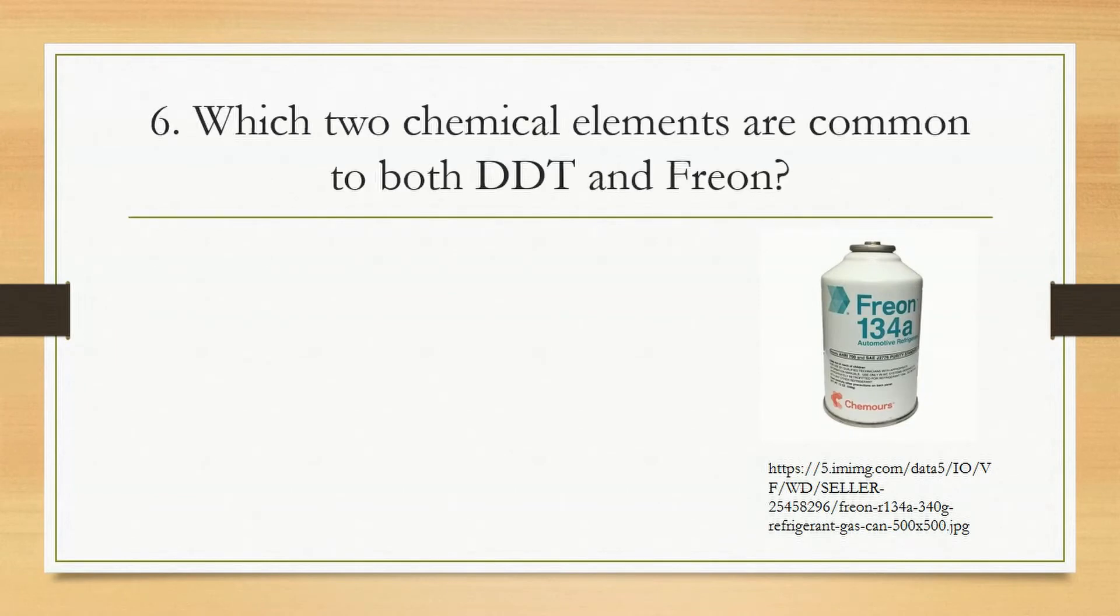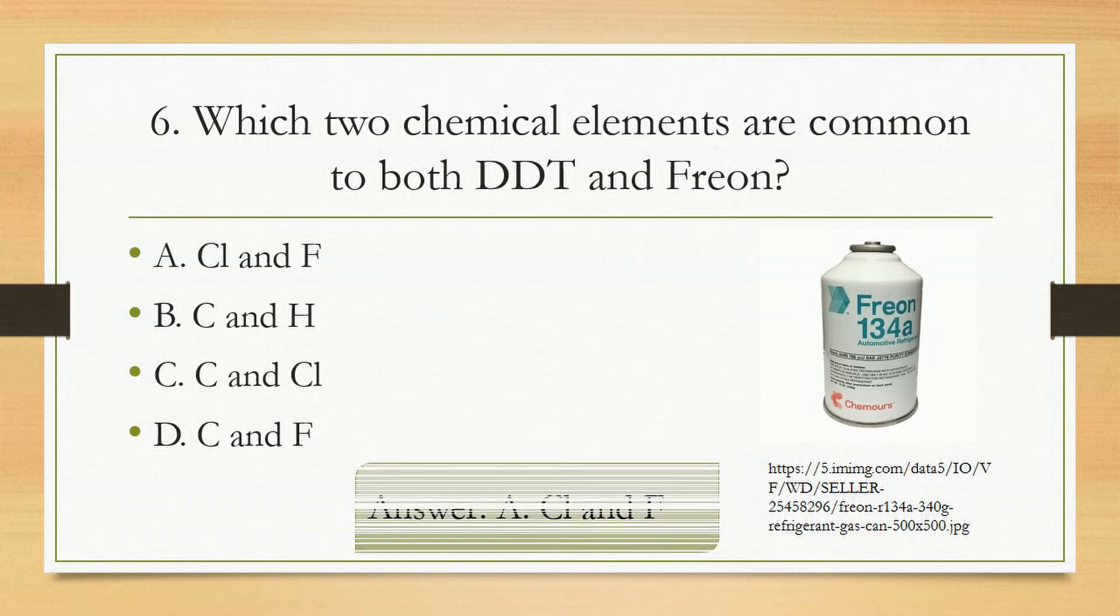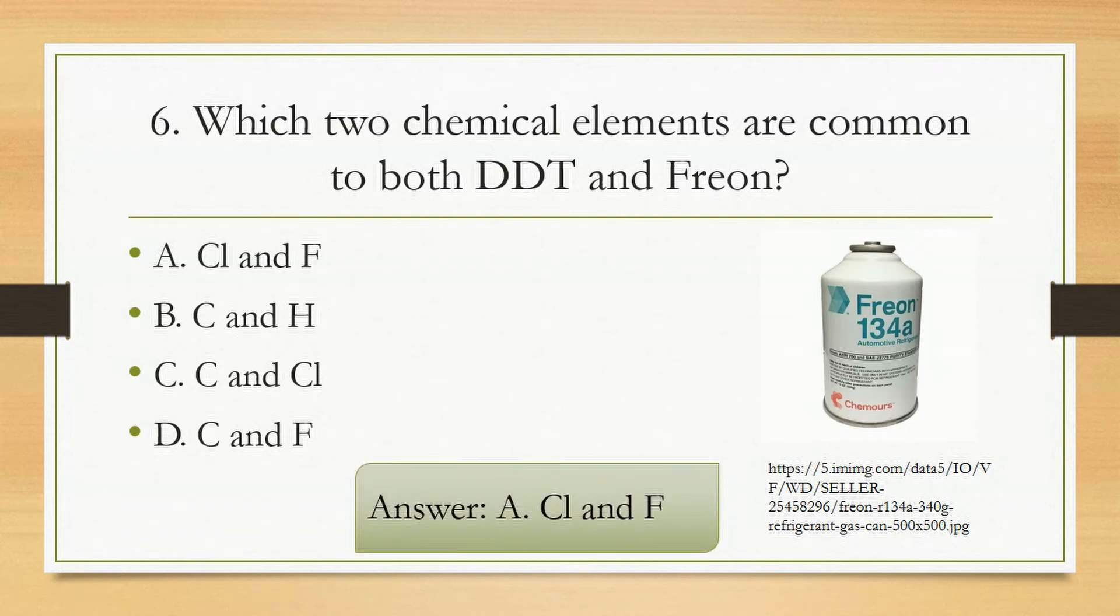Number 6. Which two chemical elements are common to both DDT and Freon? Letter A, Chlorine and Fluorine. Letter B, Carbon and Hydrogen. Letter C, Carbon and Chlorine. Or Letter D, Carbon and Fluorine. The answer is Letter A, Chlorine and Fluorine.